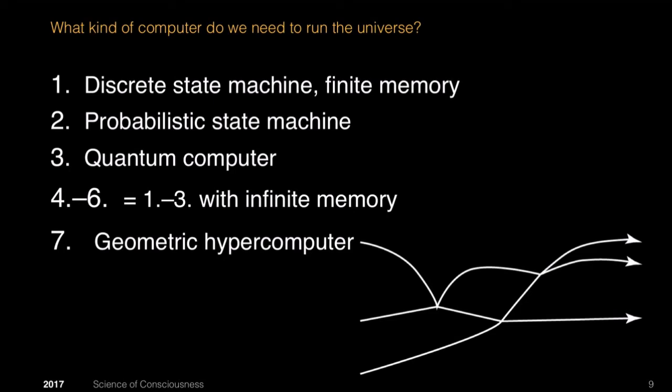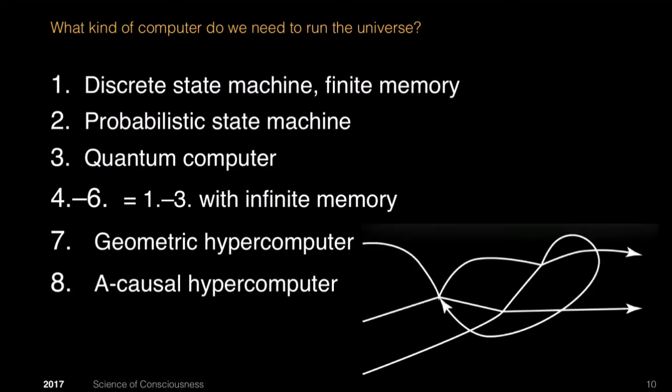It could also be a geometric hypercomputer, which is what physicists believed for the longest time—that the universe is continuous and able to perform continuous operations. It's something that you cannot do with a digital computer; it can only approximate it. Or it could be an acausal hypercomputer, one where you can take information, calculate it, and send it back in time in a closed time-like loop. That's also a computer, just one that cannot be simulated on a discrete state machine.